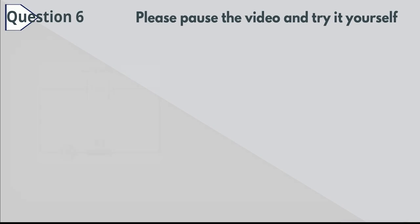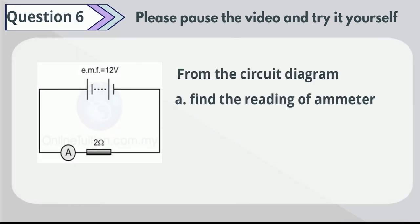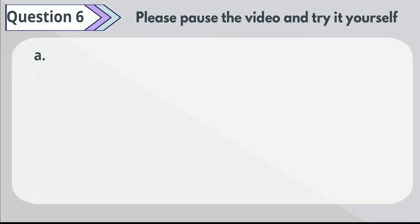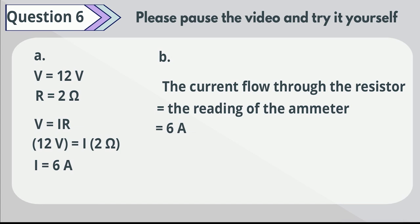Question 6. From the circuit diagram, find the reading of the ammeter and the current flow through the resistors. Please pause the video to try it yourself. From the data given, the current is equal to 6 amps. The current flow through the resistors is equal to the reading of the ammeter. Thus the current flow is also 6 amps.